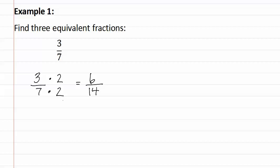Let's pick another number. How about three? If we multiply the numerator and the denominator by three, we get nine twenty-firsts. This is another equivalent fraction to three-sevenths.